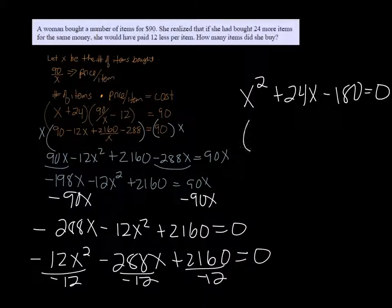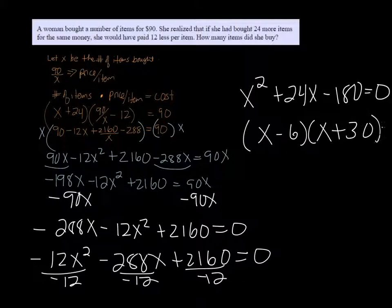This can easily be factored into X minus 6 and X plus 30. And taking each one of those, setting them equal to zero.